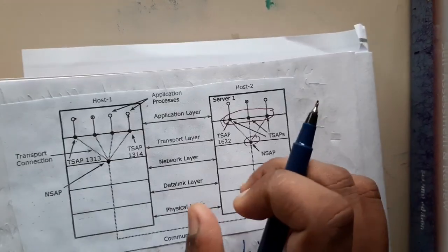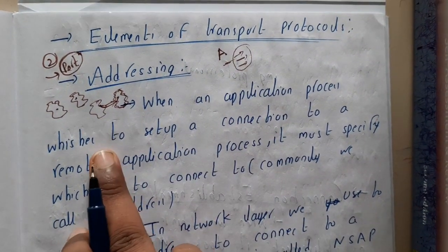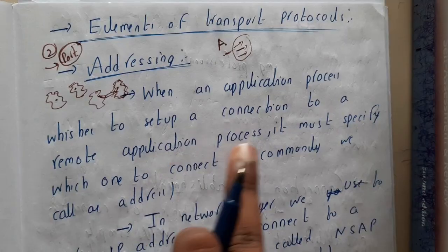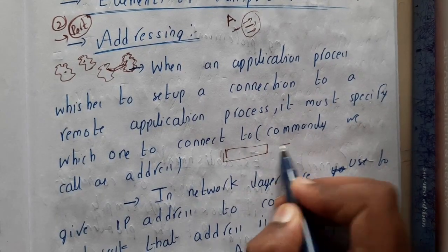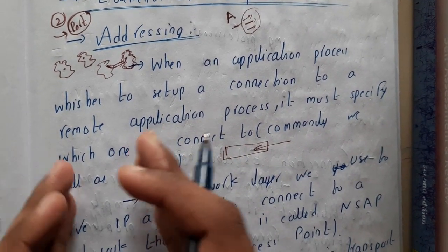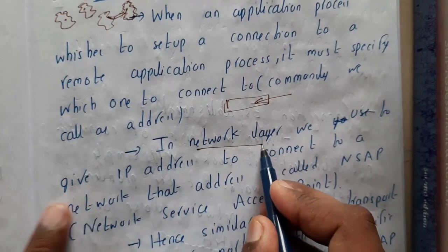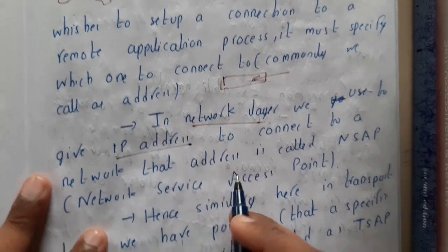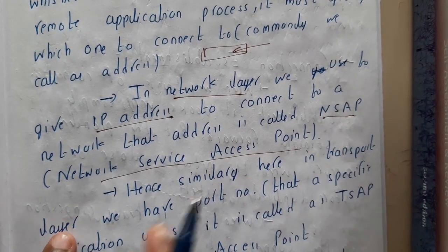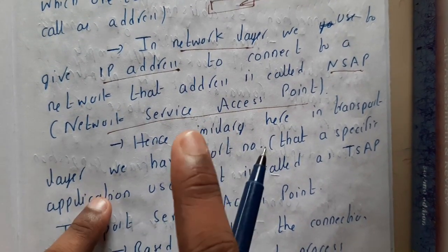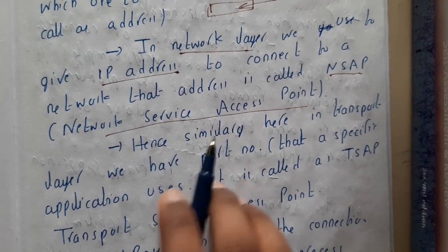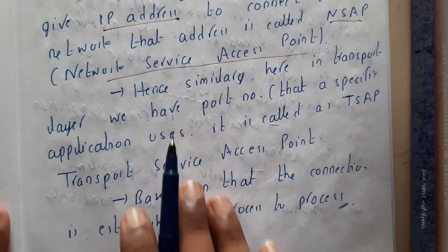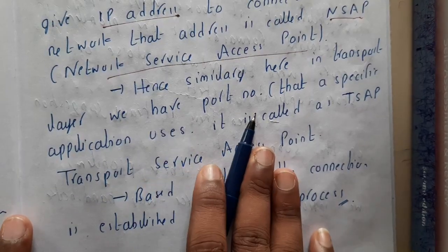The transport layer is responsible for selecting which port number or exact location the data should go to. When an application process wants to connect to a remote application process, it must specify which one to connect to — commonly we call these addresses. In the network layer we used IP address, which is called the Network Service Access Point (NSAP). Using only IP address, you can reach a system but you cannot identify which application needs the data.